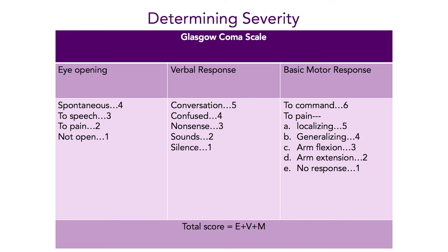The most commonly used tool is known as the Glasgow Coma Scale, or commonly referred to as the GCS. The GCS has three domains, including eye opening, verbal responsiveness, and basic motor response. Eye opening can range from spontaneous opening of the eyes, in which you receive the maximum score of a four, to not opening the eyes to speech or to pain, in which you receive a minimum score of one. Verbal responsiveness ranges from a one, silence, to a five, engaging in conversation. And finally, basic motor response is assessed using both command following and by assessing through pain response.